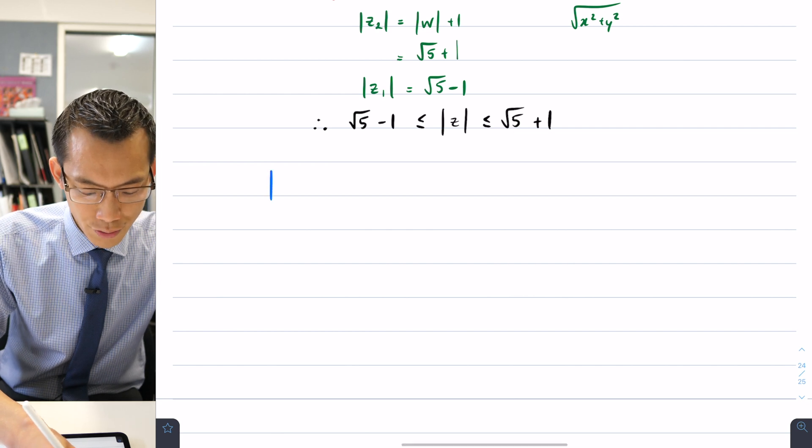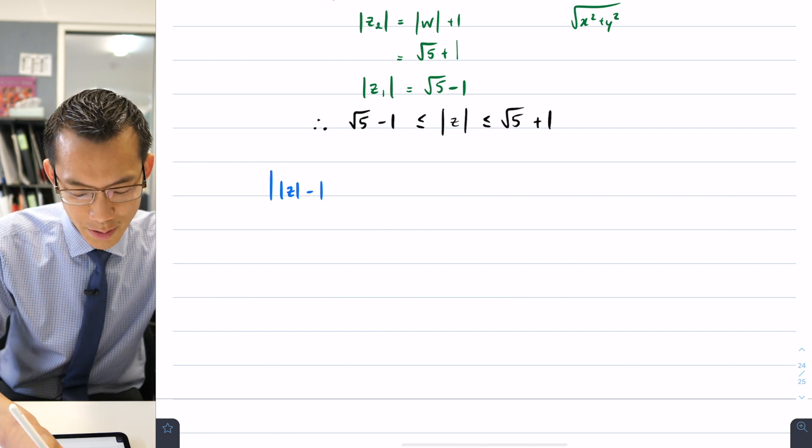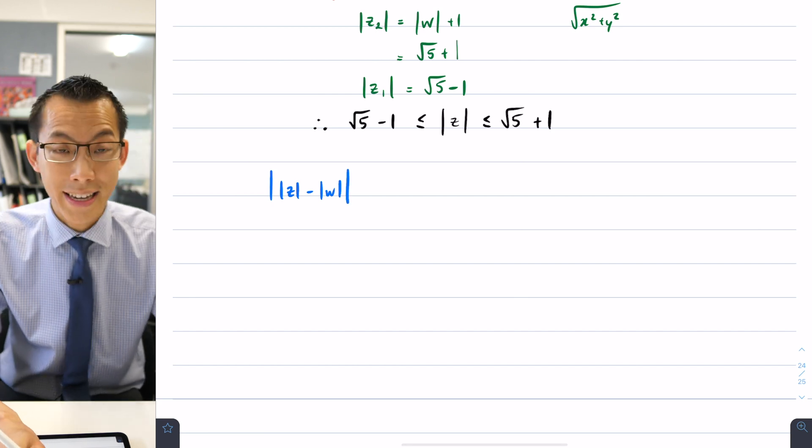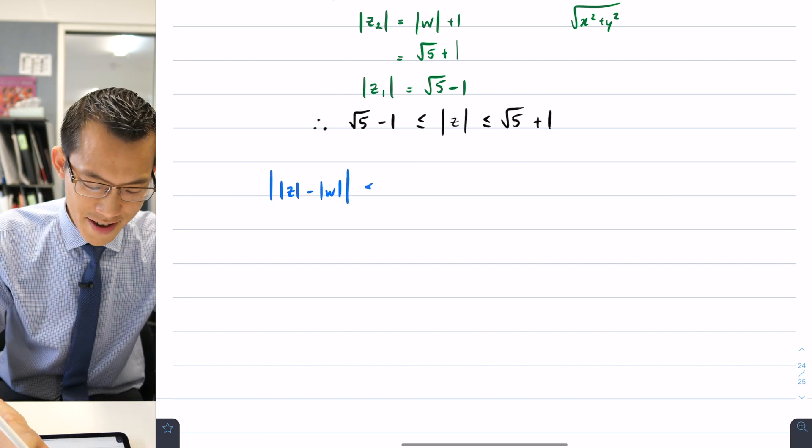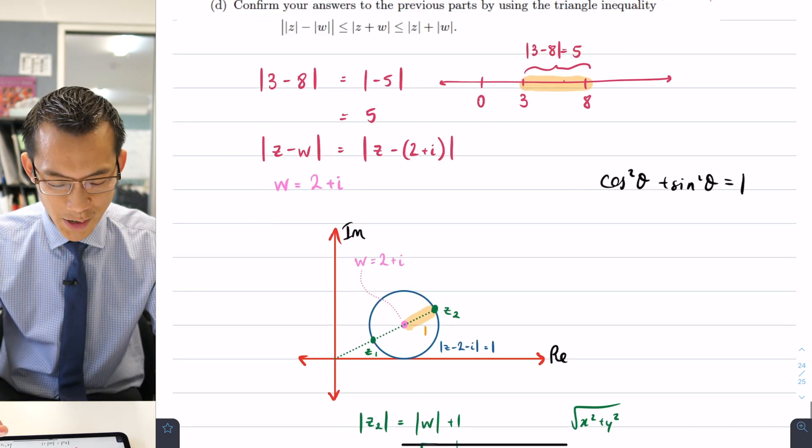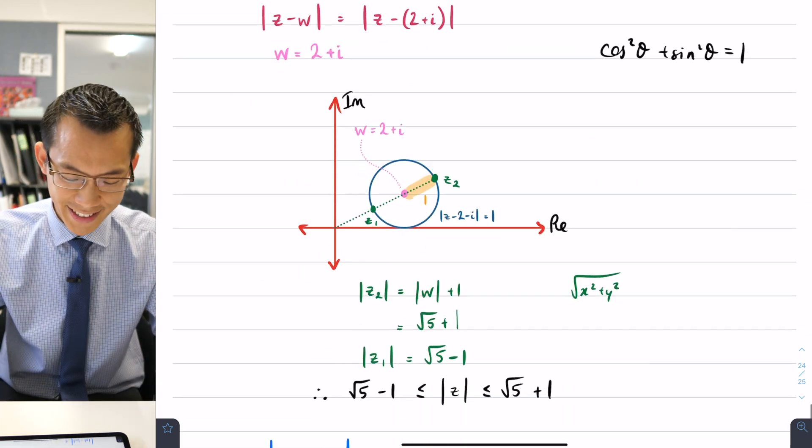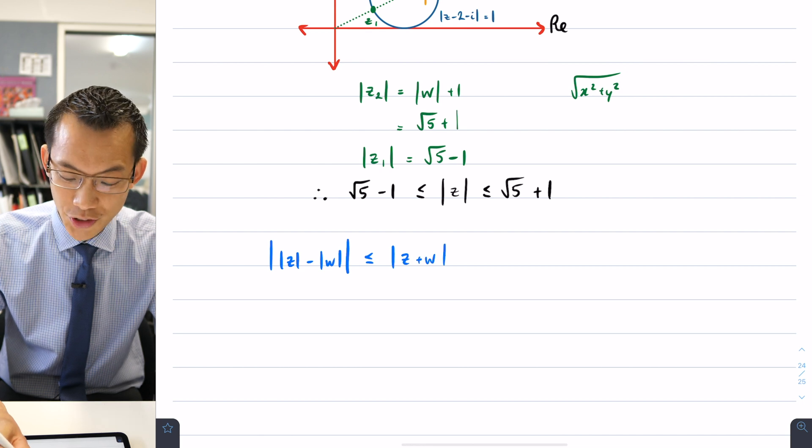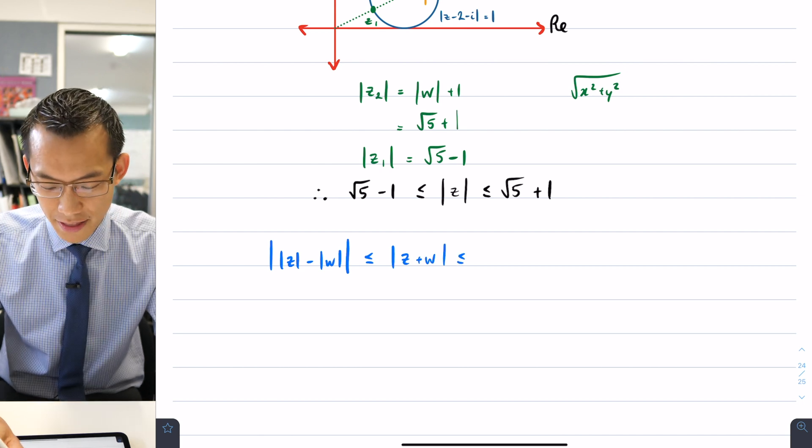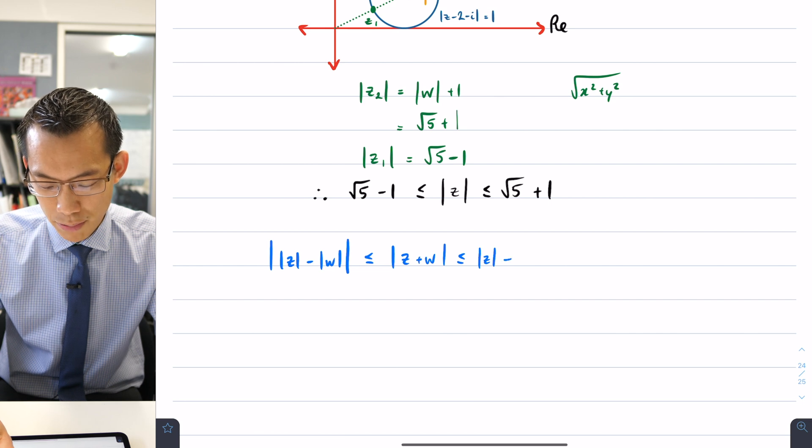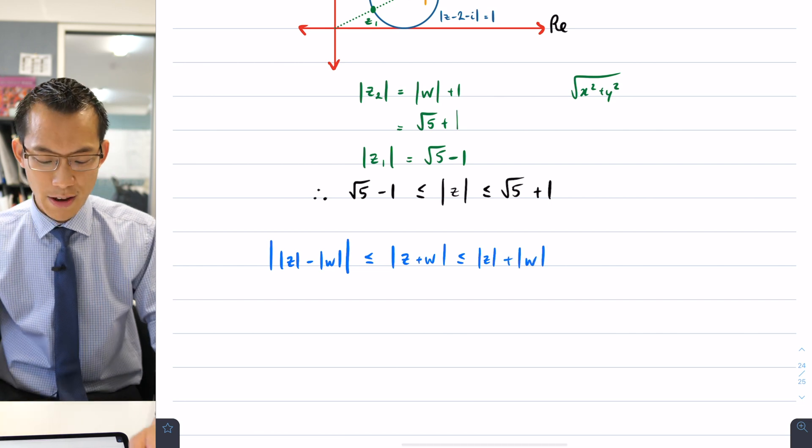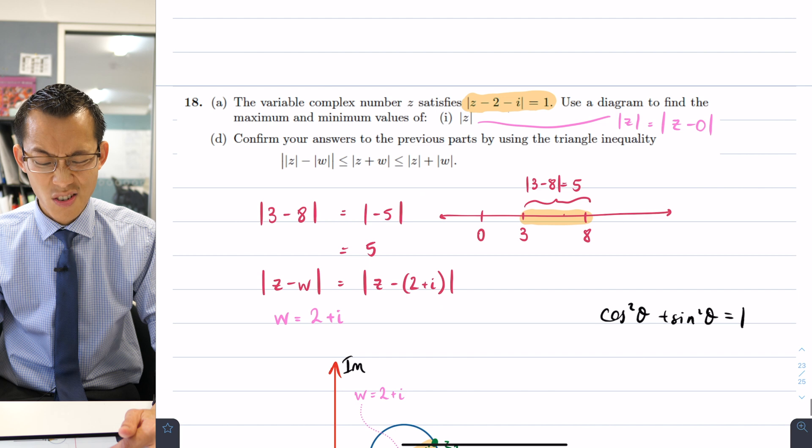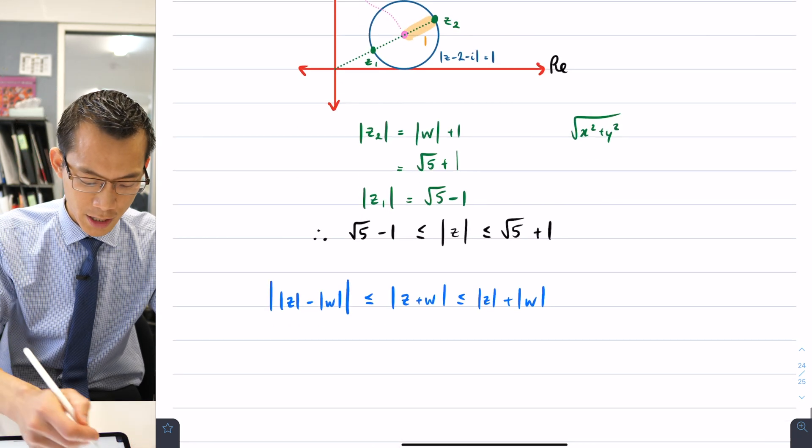Alright, so here comes the triangle inequality. I'll just write it out. It's absolute value, absolute value of z take away absolute value of w, absolute value again, take a breath. Then you've got less than or equal to, and you go up there to make sure you're writing everything correctly. It's going to be the absolute value of z plus w, which is less than or equal to again, the absolute value of z, the modulus of z, plus the modulus of w separately. You just have a look back, did I get it all right? Looks okay to me. So this is part D.